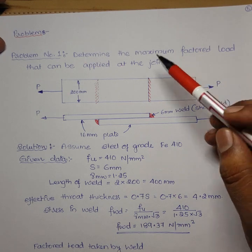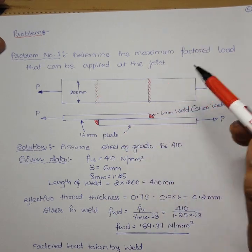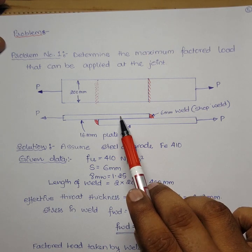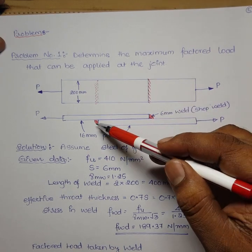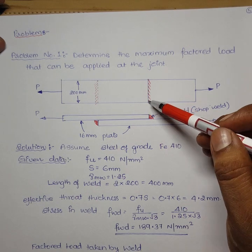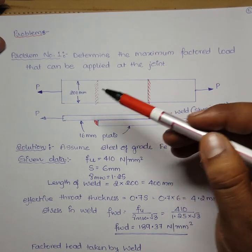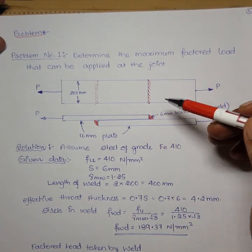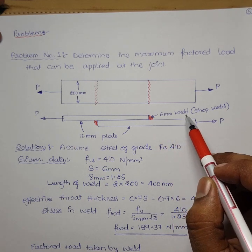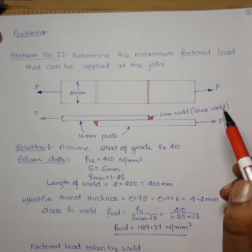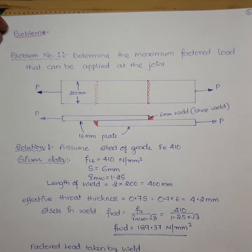Problem 1: Determine the maximum factored load that can be applied at a lap joint. One plate is on top and the other on the bottom, welded on upper and lower sides. Since the width of the plate is 200 mm, the length on each side is 200 mm, giving a total weld length of 400 mm. The weld is 6 mm and it is a shop weld; find the factored load P.